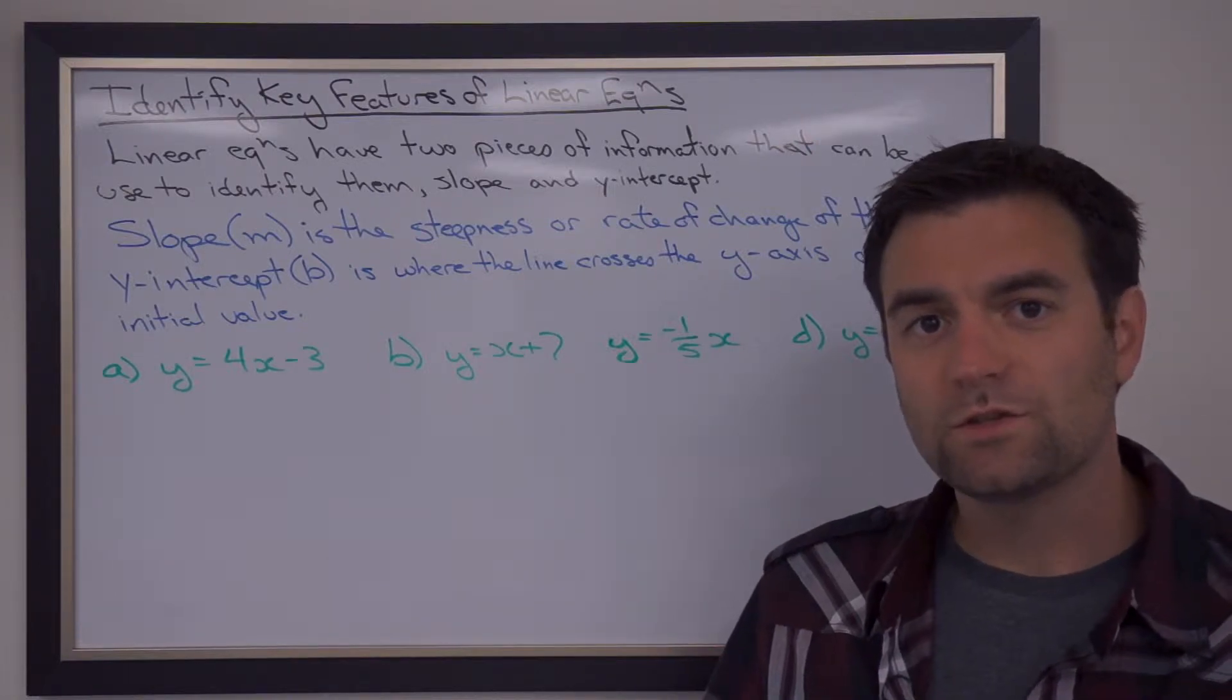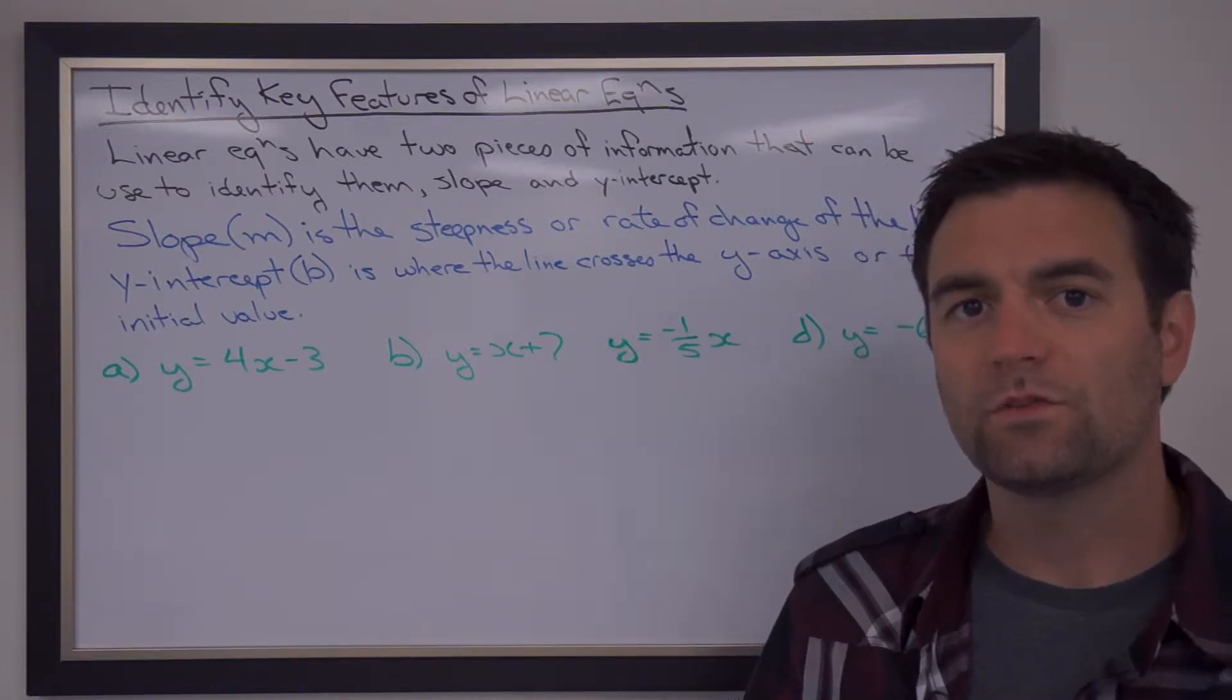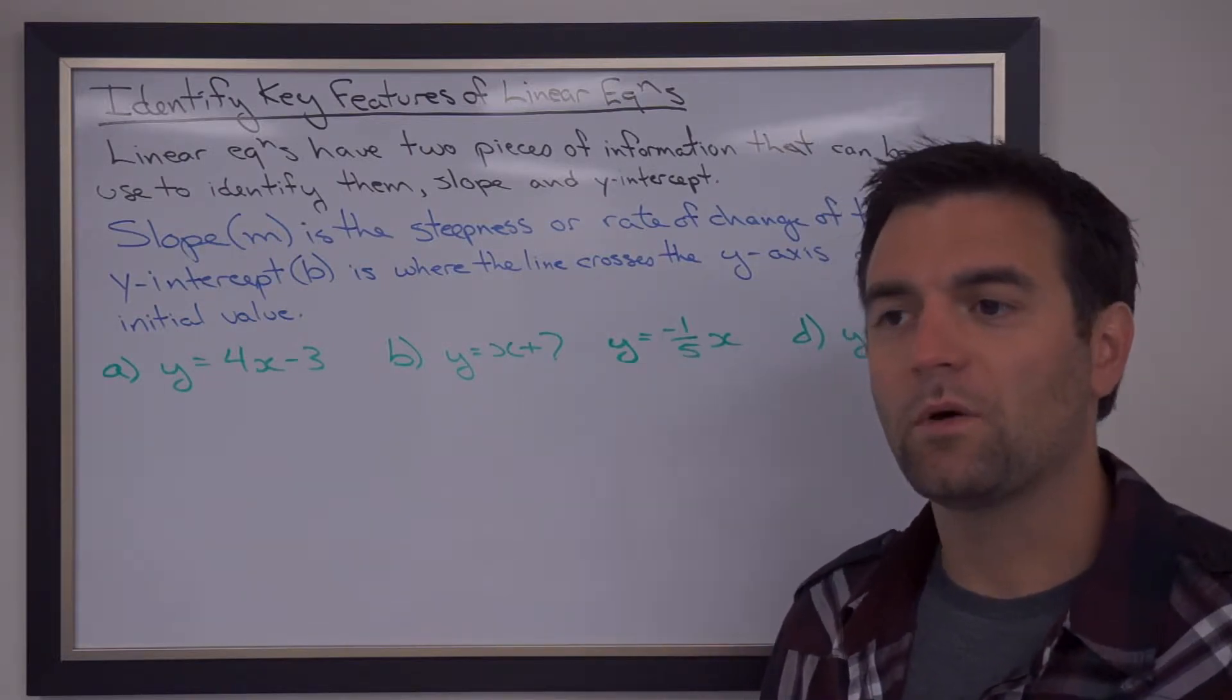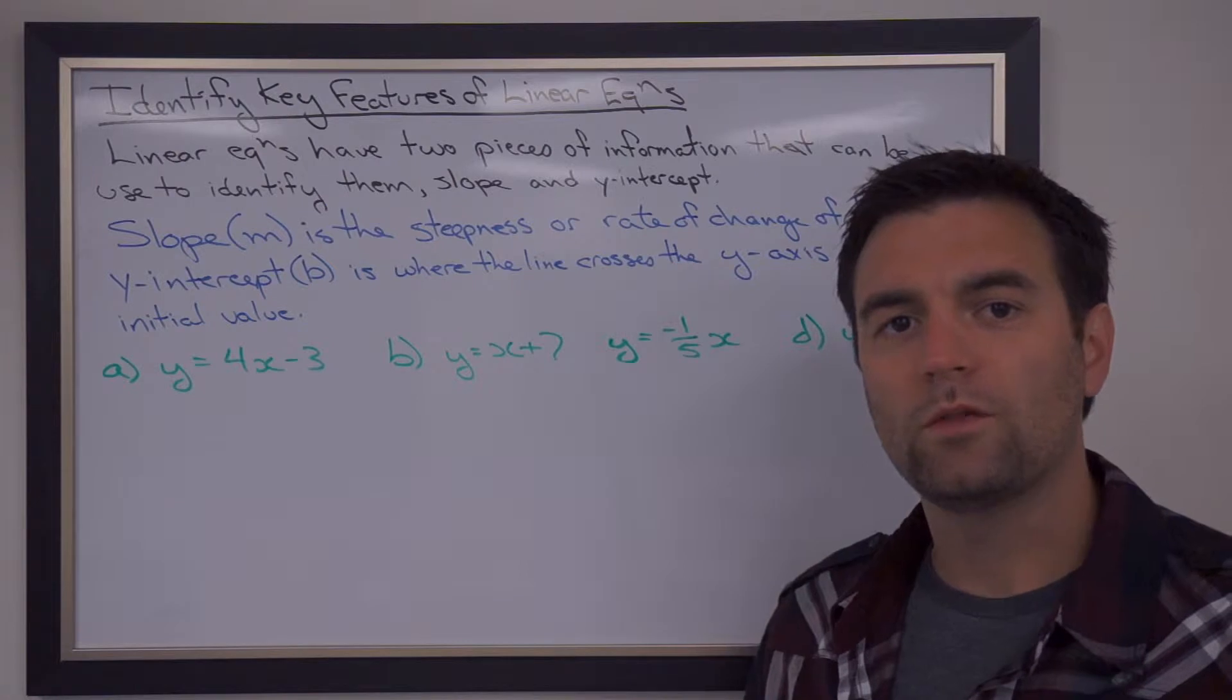Identifying key features of linear equations requires us to find two pieces of information. There's two pieces of information that linear equations are made up of: the slope and the y-intercept.